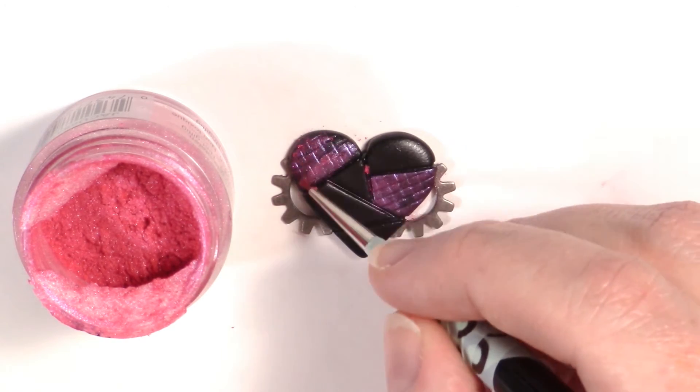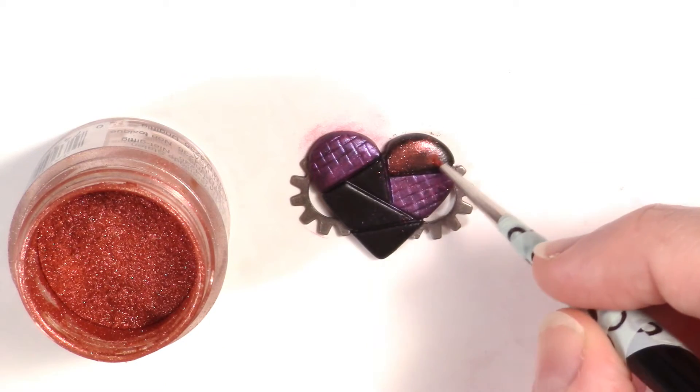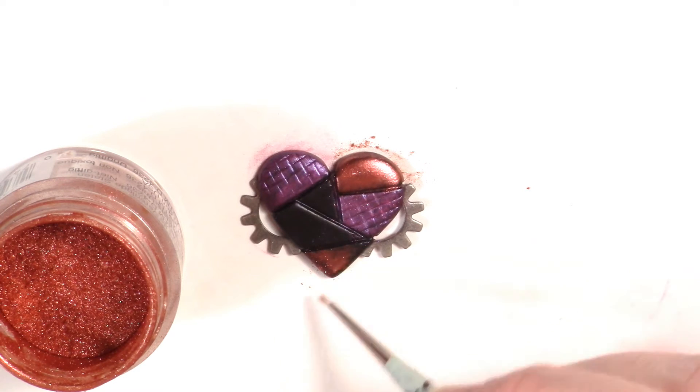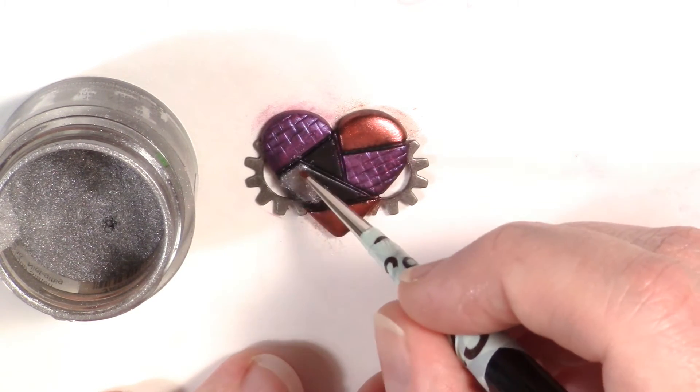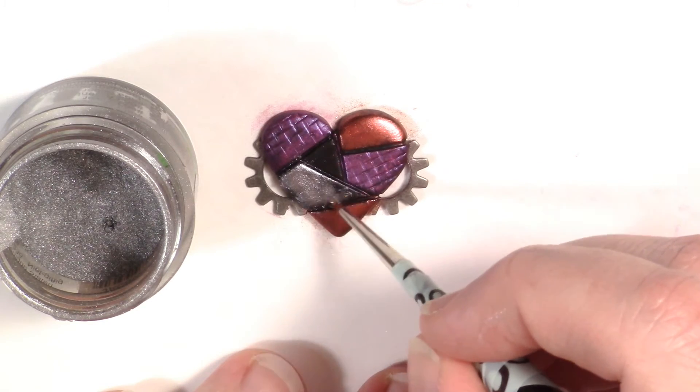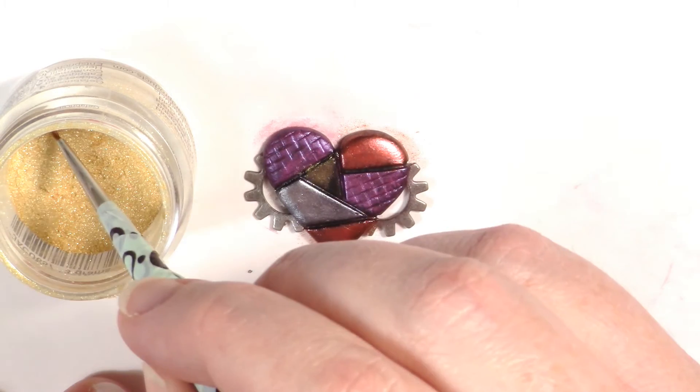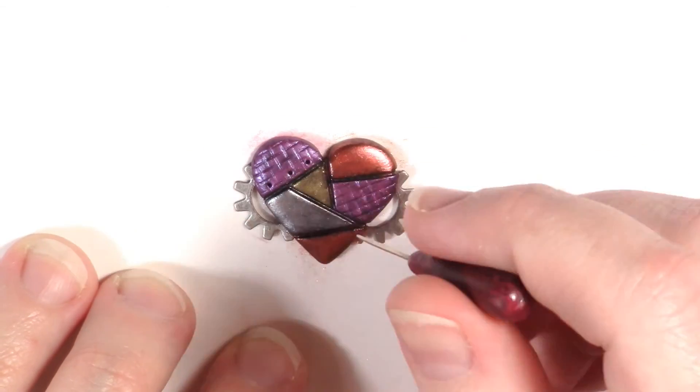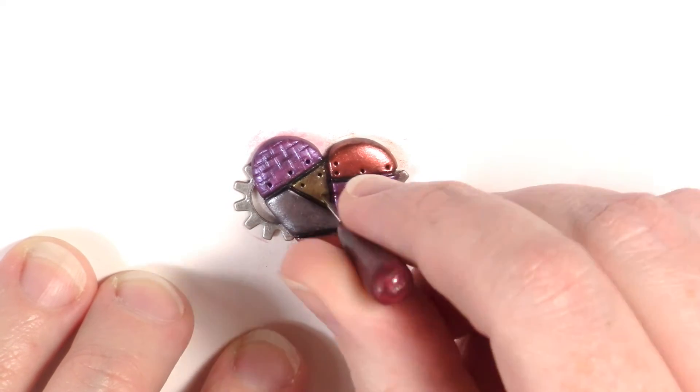Repeat for the rest and make sure you do the sides of the heart. Now take your needle and start making a few dots around the border of each metal section to give it a rivet look.